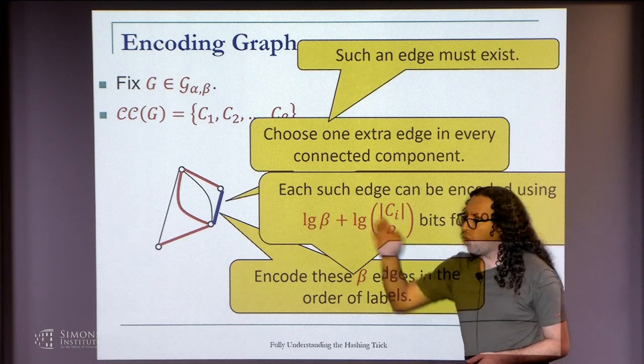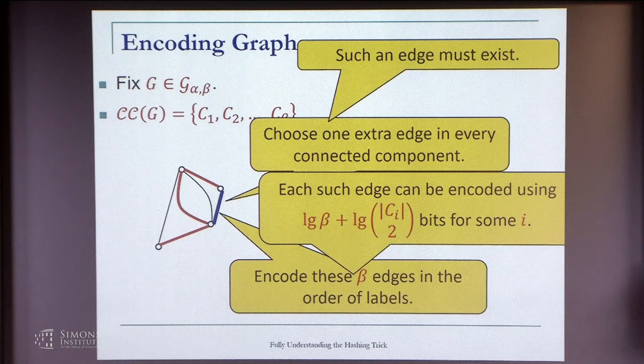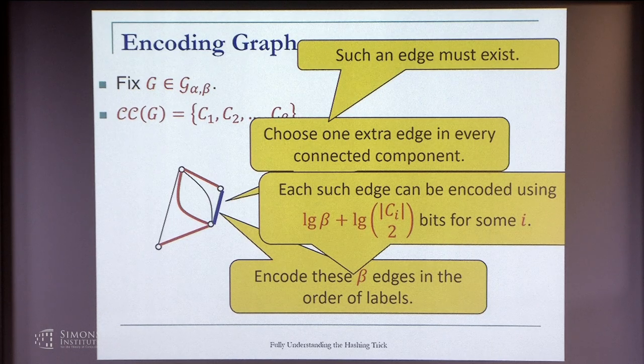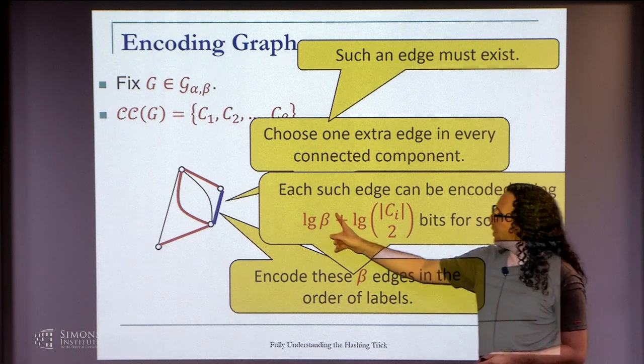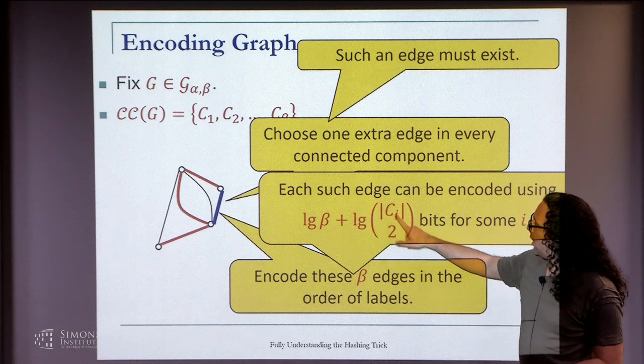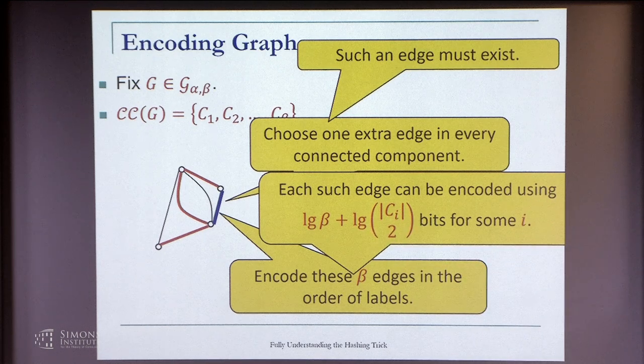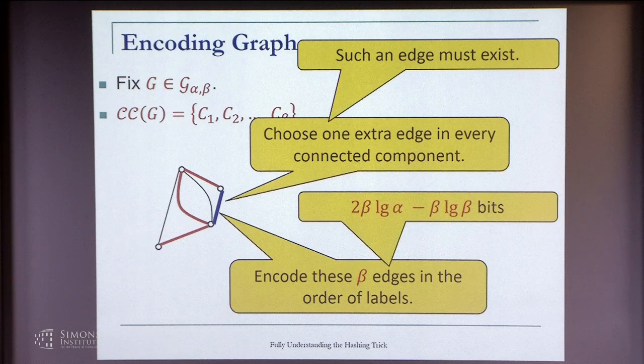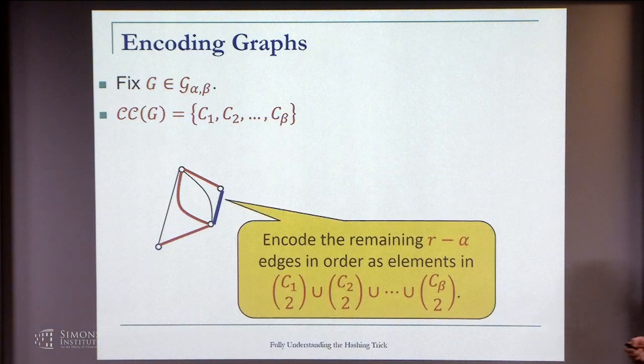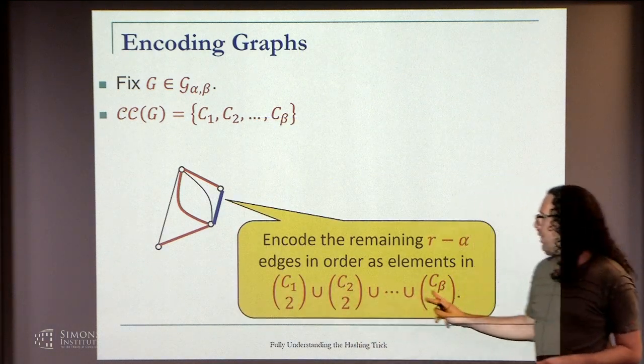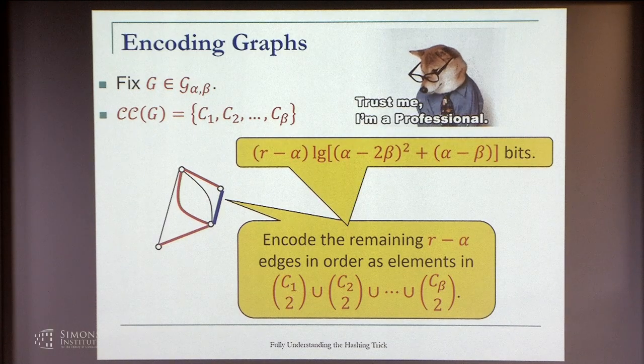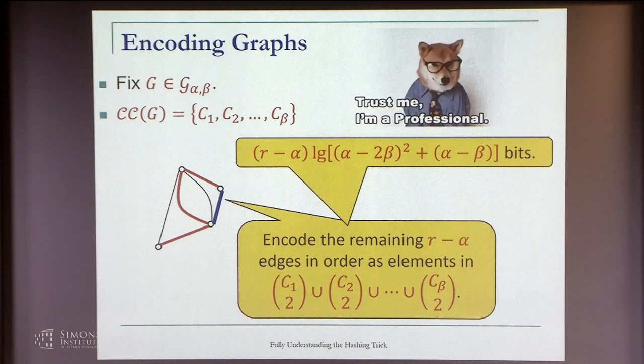This edge can be encoded very succinctly. If we order the connected components by the smallest node, then we know the ordering. Once we have the trees, we know the ordering. We can refer to each connected component by its place in this ordering plus a label within its own edges. This sums up to be this many bits. The rest of the edges, we just encode them as elements in this set. You have to trust me that this is what you get.